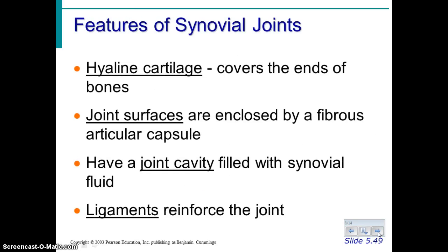Some features that synovial joints have in common would be hyaline cartilage covering the ends of the bones — we looked at slides of that in the last unit. Joint surfaces are enclosed by a fibrous capsule, so the whole joint is surrounded by some fibrous tissue. There is a joint cavity filled with synovial fluid, and then ligaments reinforce that joint.